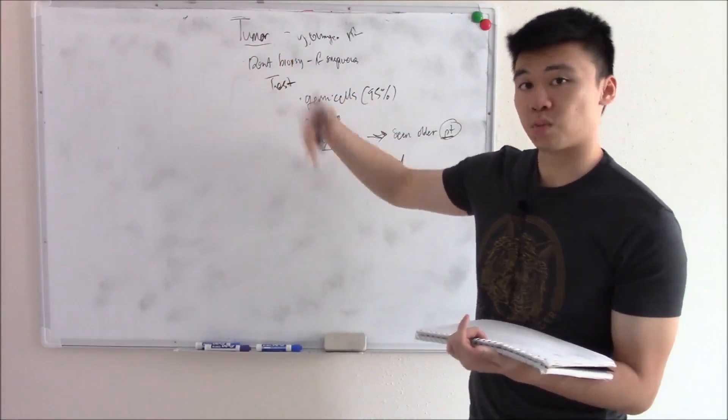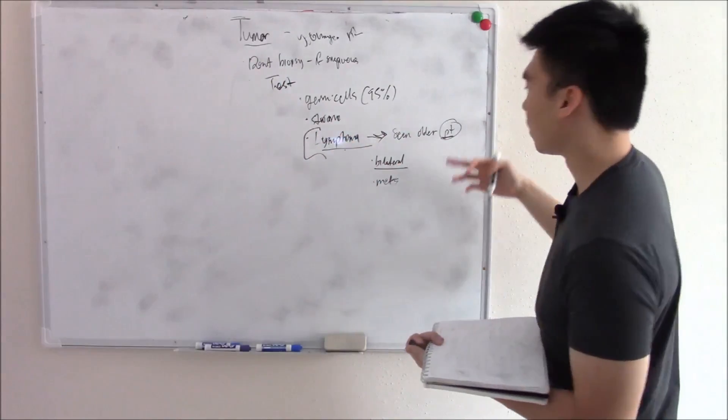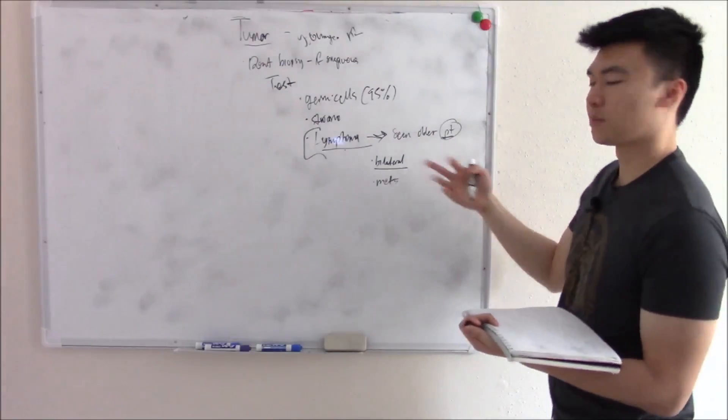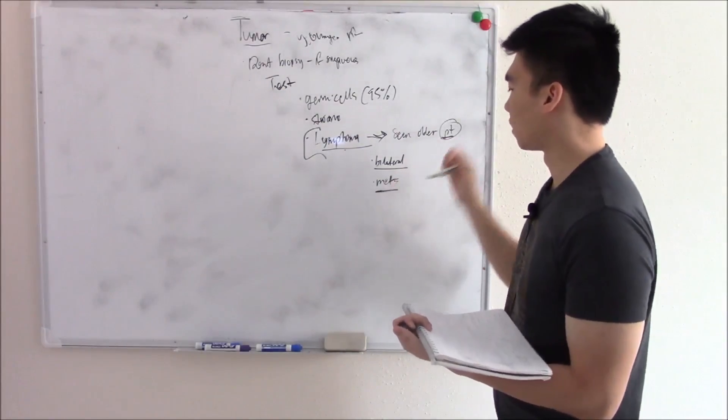We're just kind of talking about it because it affects the testicles. Everything else is going to be primary testicular cancer, but because lymphoma can affect the testicles, we're going to talk about it here. So if a patient is old, has a bilateral mass, you're thinking lymphoma. And this is from metastasis.